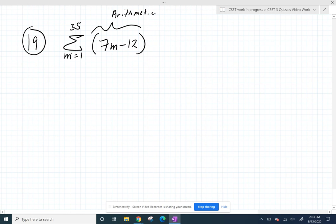So we can use the sum of an arithmetic sequence is the average of the first and the last terms times how many terms we have.